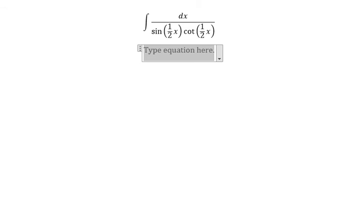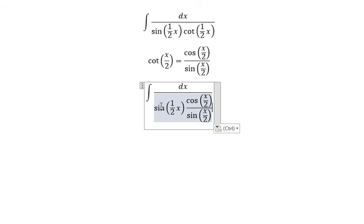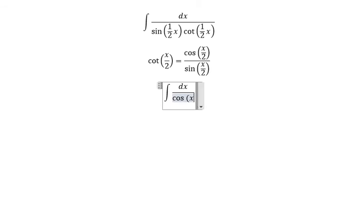We have cot(s/2) equals cos(s/2) divided by sin(s/2). So we put this one in here. So now we have sin and sin that we cancel together. So you have only cos(s/2).